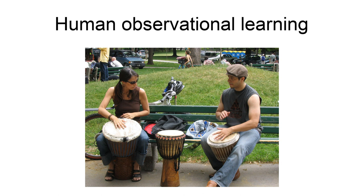Culture plays a role in whether observational learning is the dominant learning style in a person or community. Some cultures expect children to actively participate in their communities and are therefore exposed to different trades and roles on a daily basis. This exposure allows children to observe and learn the different skills and practices that are valued in their communities.